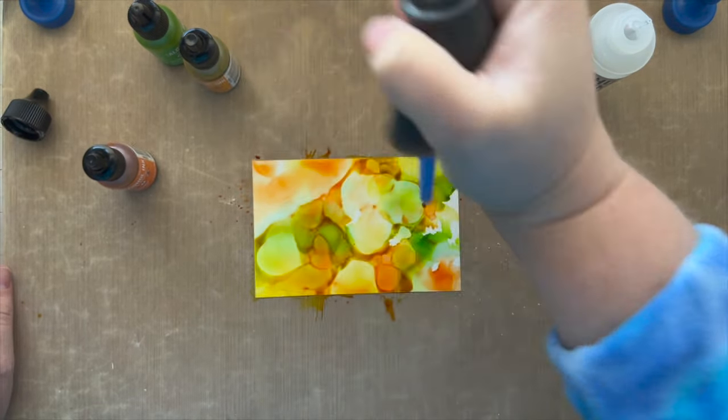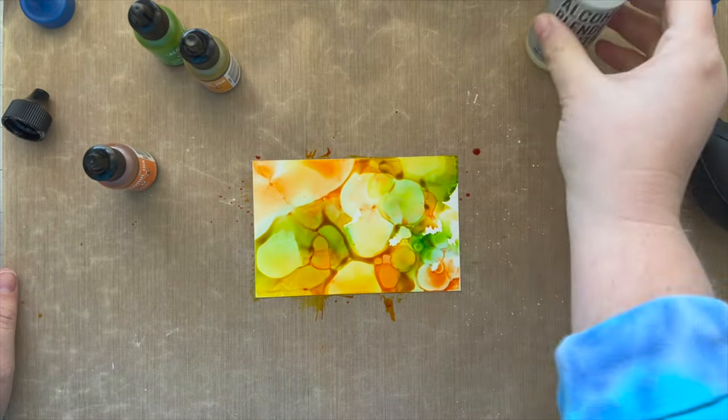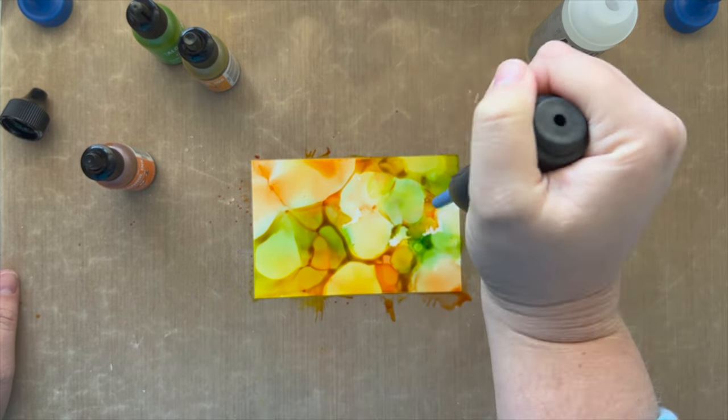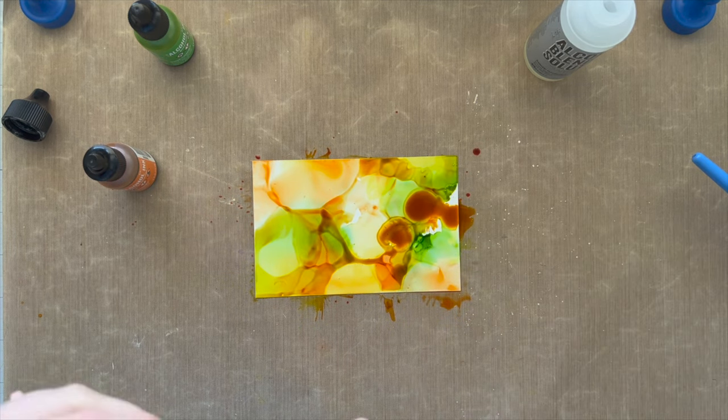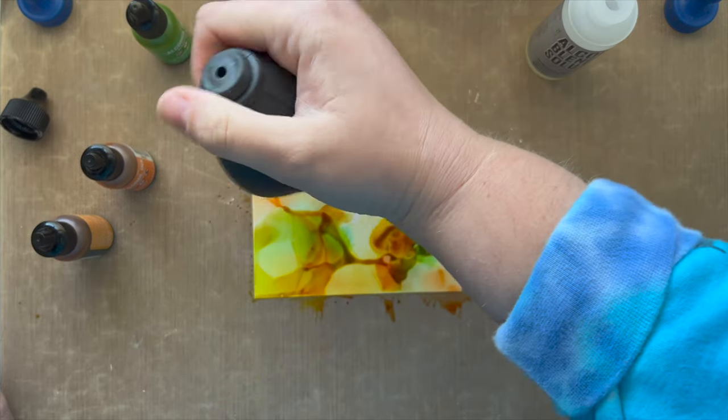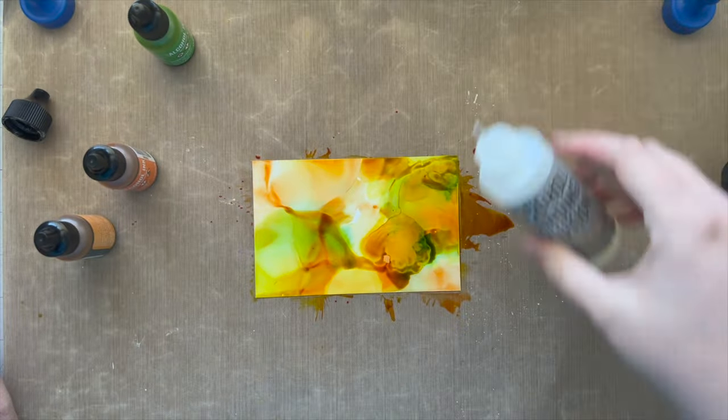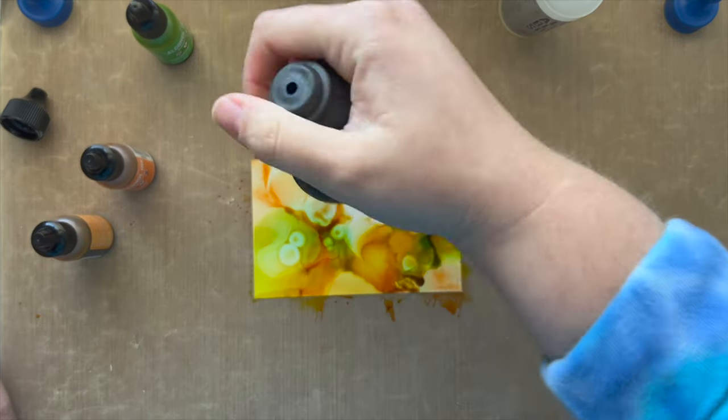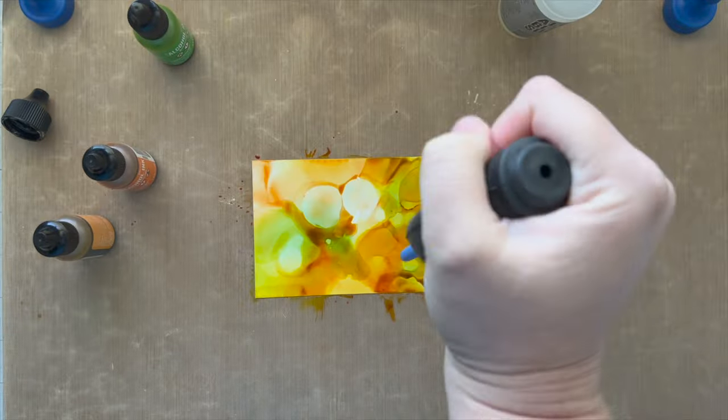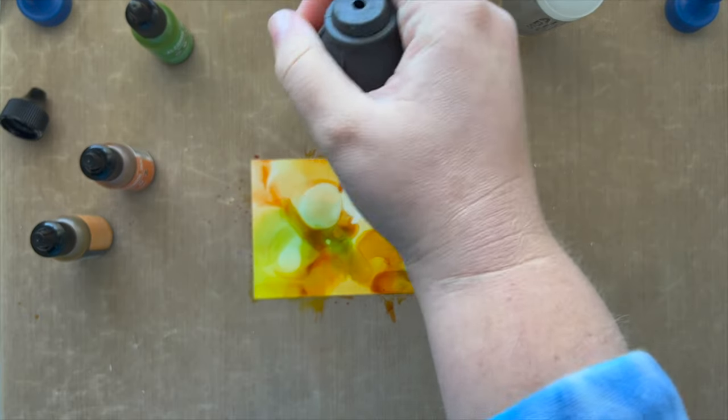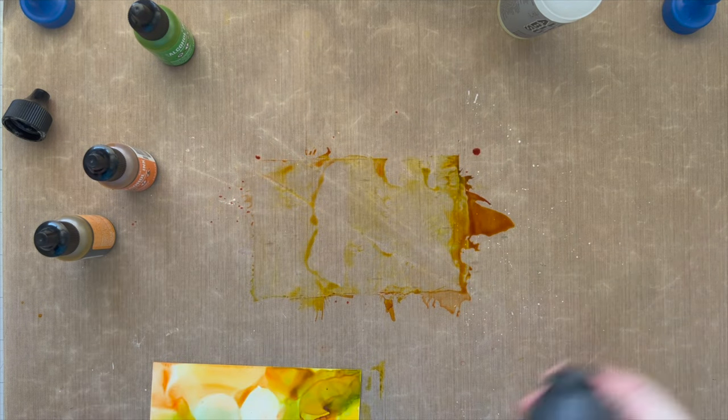With alcohol inks, just like any other ink, you can always add more, but you can't take color away. I mean, I guess you could add some blending solution, but just put a little bit first and then keep adding color as you go. I am still learning how to use alcohol inks myself, so I left in my whole entire process so you can see how I am scooching the color around with the air and then adding color and solution until I'm happy with it.